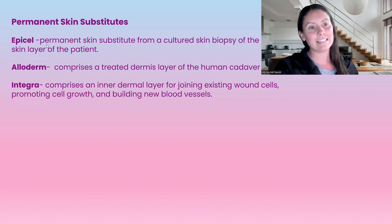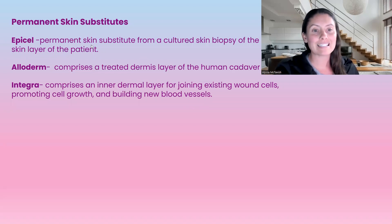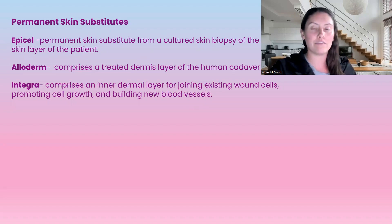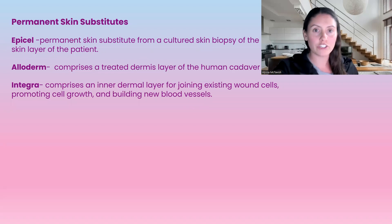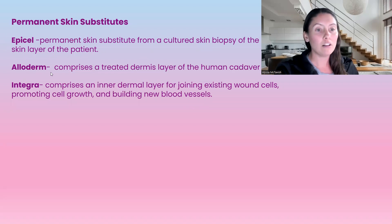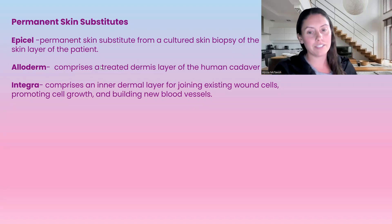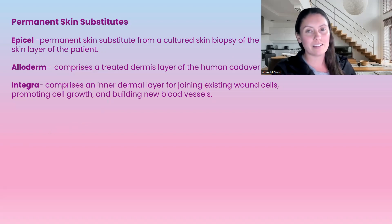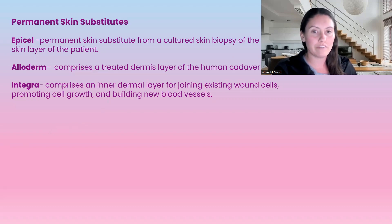For permanent skin substitutes, there are three different kinds. Epical is a permanent skin substitute cultured from a skin biopsy of the outer layer of the patient's own skin — normally taken from the thigh — which is then cultured and placed over the wound. Alloderm is the outer layer of skin from a human cadaver. Integra uses the inner dermal layer; it joins existing wound cells, promotes cell growth, and supports the building of new blood vessels.